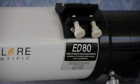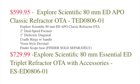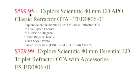When I was looking at Explore Scientific's 80 millimeter refractor, I discovered there were two versions of the same scope. One for $599 and the other one was $729. And they both appeared to have the same specs. This one is the TED model. And then the more expensive one is the Essential, the ES model.